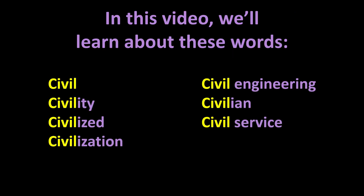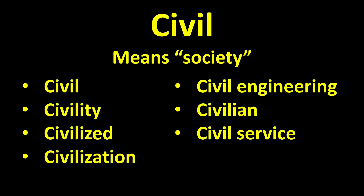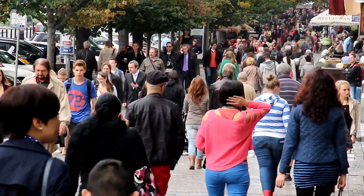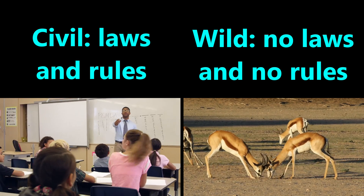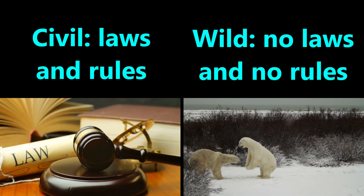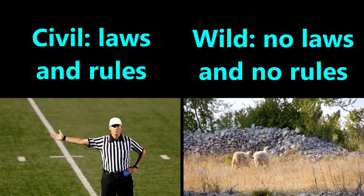In this video, we'll learn the definition of these words by focusing on the meaning of the word parts which make up each word. The word root civil means society. More generally, the root civil refers to a large group of people living together. The word root civil is part of many words. The key meaning of civil is that people make and follow rules. This is one of the key ways that make us different than wild animals.